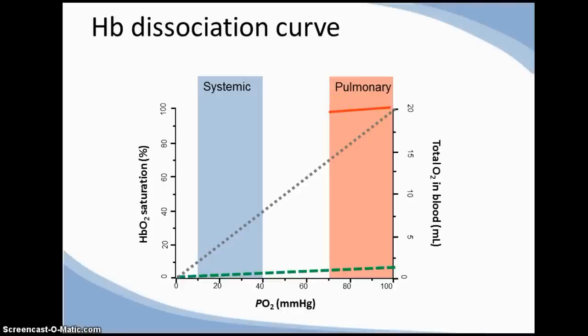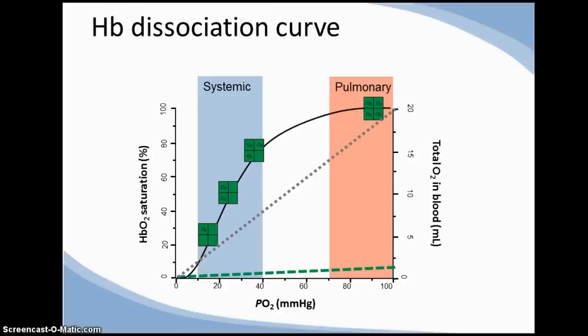Also, there is a steep relationship between small changes in tissue PO2 and haemoglobin unloading. On to this, we can overlay icons representing 100, 75, 50, and 25% saturation values on the y-axis and replace the two linear trends with the true sigmoid-shaped relationship.